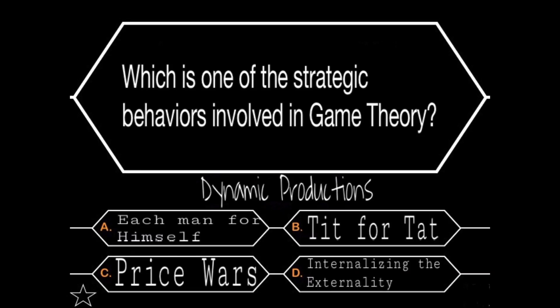Okay, next question. What is one of the strategic behaviors involved in game theory? A, each man for himself; B, tit-for-tat strategy; C, price wars; or D, internalizing the externality. Oh, I definitely know this one. The only strategic behavior involved in game theory is tit-for-tat strategy. This is when they behave cooperatively initially, but then perform the action that the other player did in the previous period. For example, limiting production of shoes to 4,000 annually because the other did in the previous period. On that note, choice B.